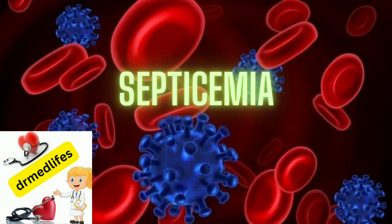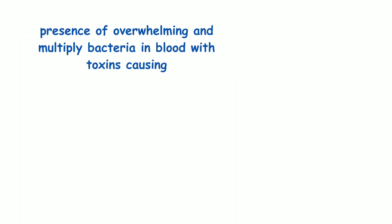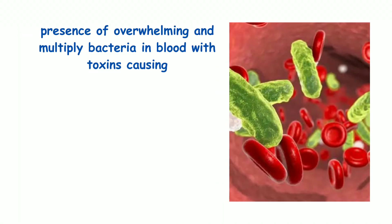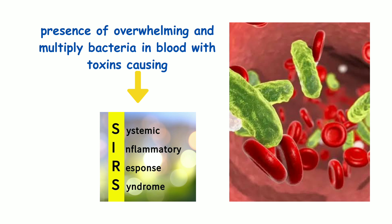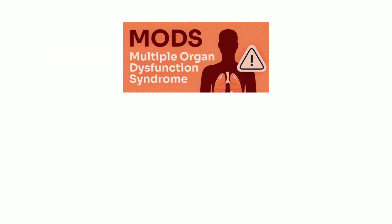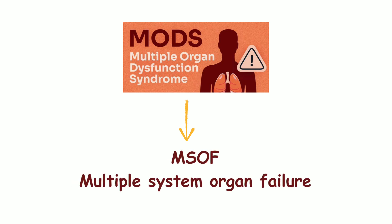Septicemia is the presence of overwhelming and multiplying bacteria in blood with toxins causing Systemic Inflammatory Response Syndrome or Multi-Organ Dysfunction Syndrome, which may later progress into multiple system organ failure.